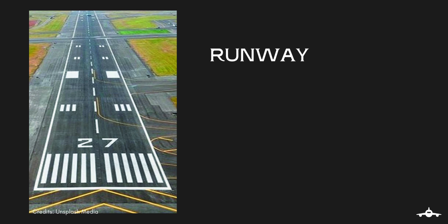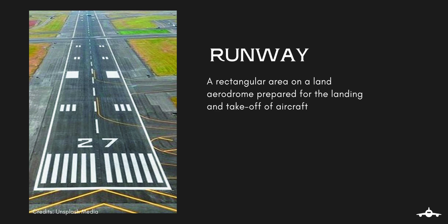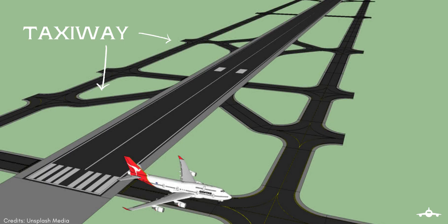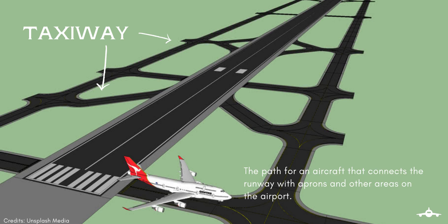You all must be familiar with the runway. It is defined as the rectangular area on a land aerodrome prepared for landing and takeoff of the aircraft. After landing, they follow a taxiway to their designated stand or a bay, and the same applies while taking off. Taxiway is the path for an aircraft that connects the runway with aprons and other areas on the airport.